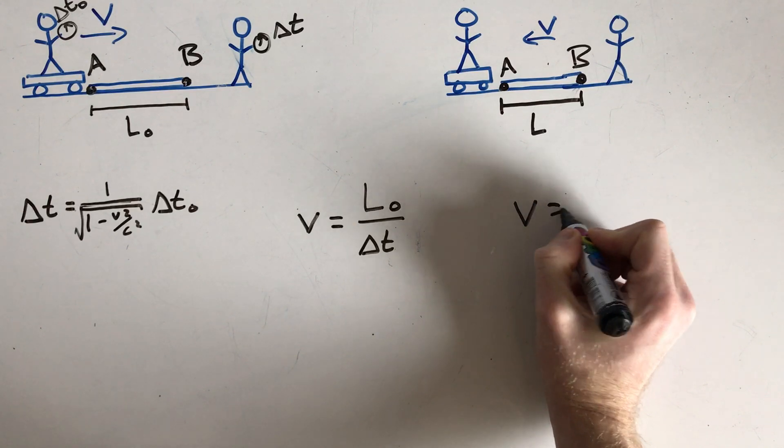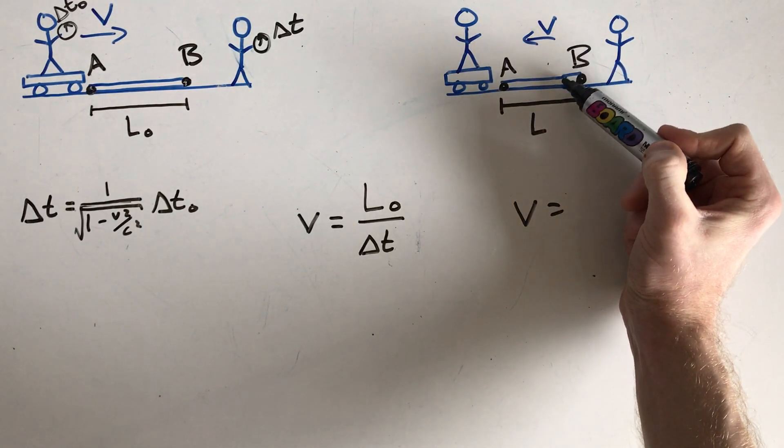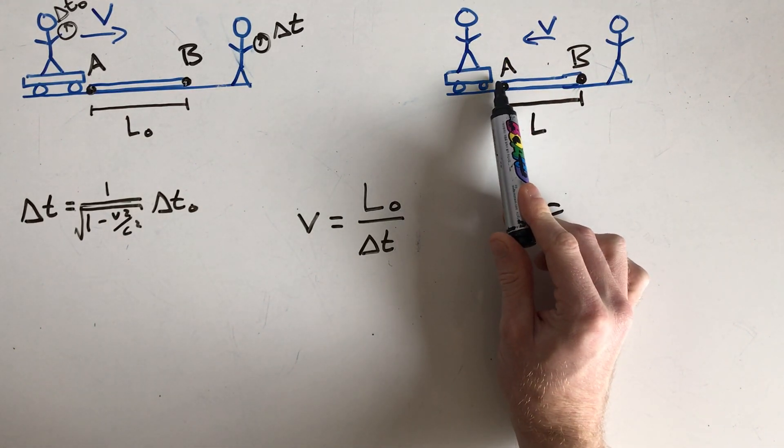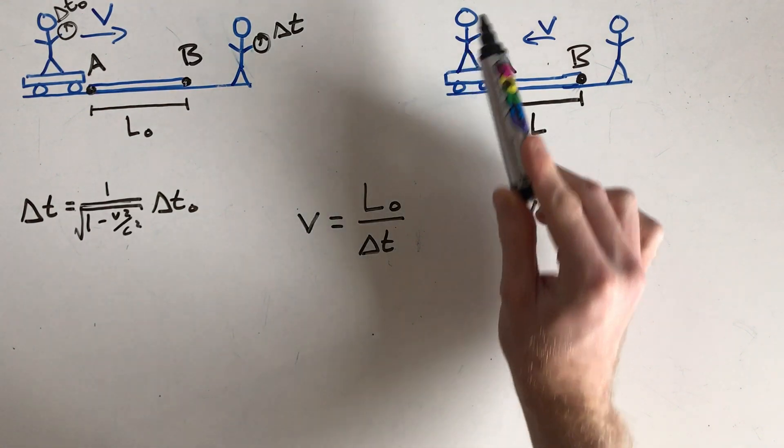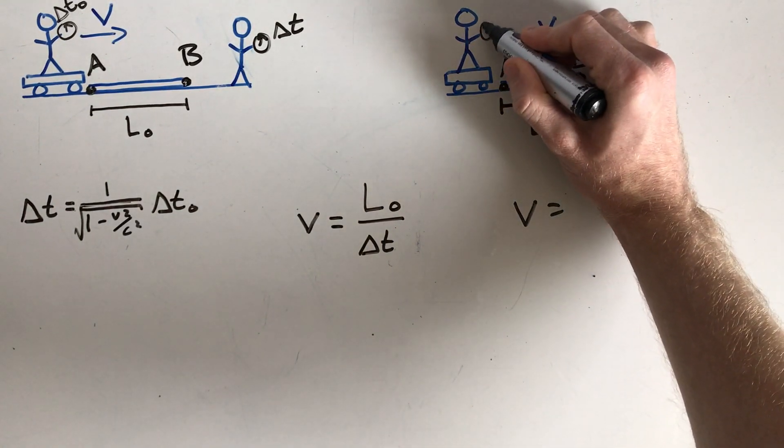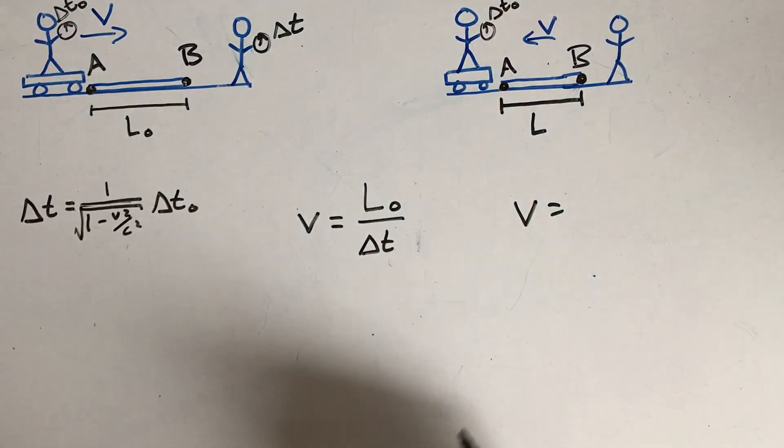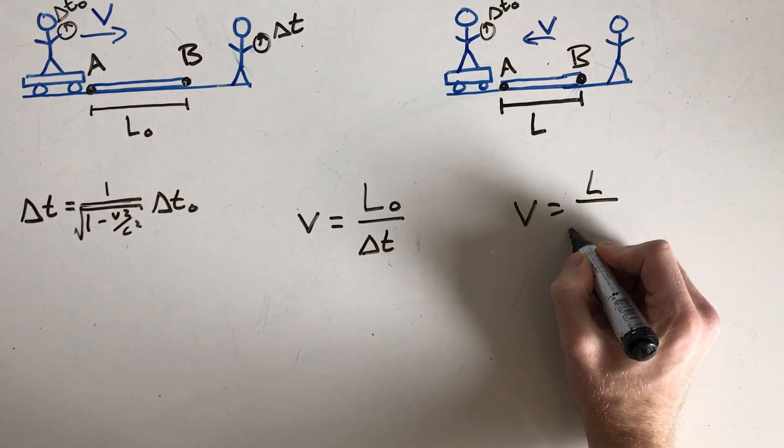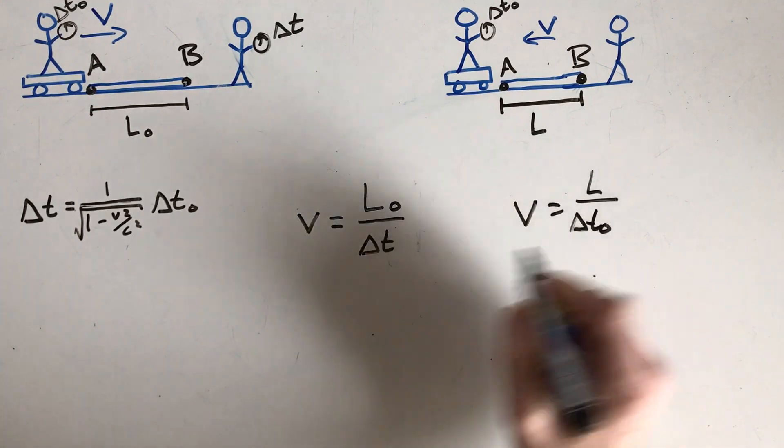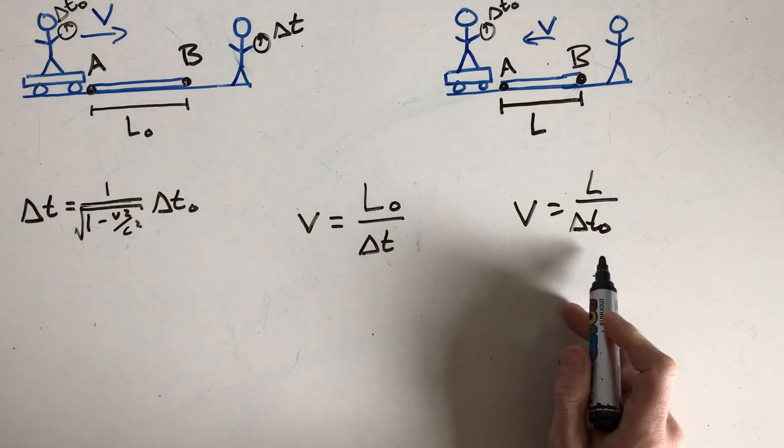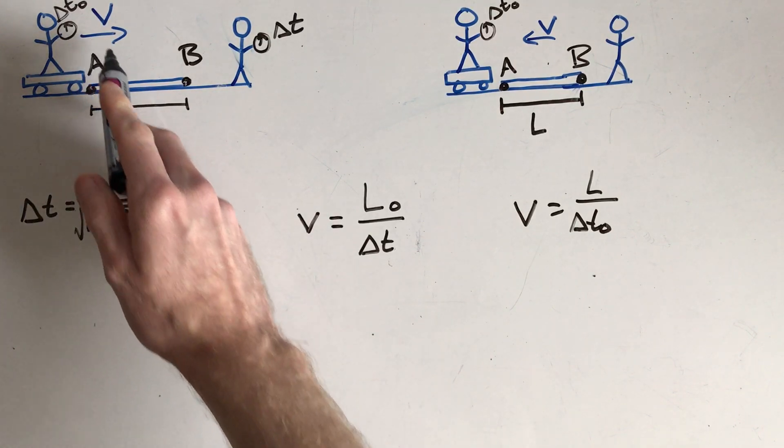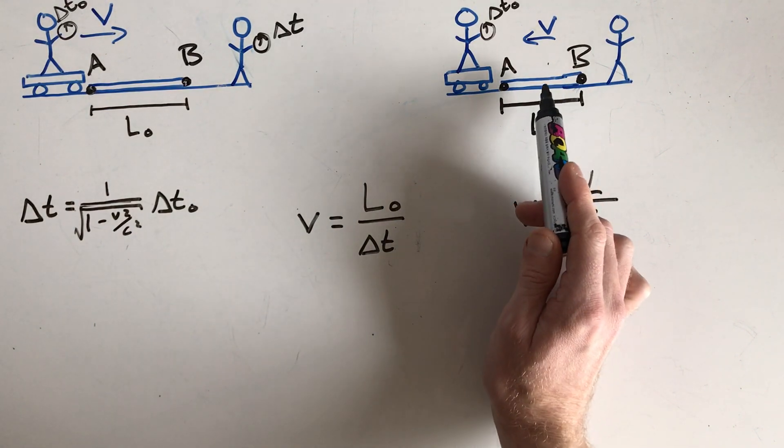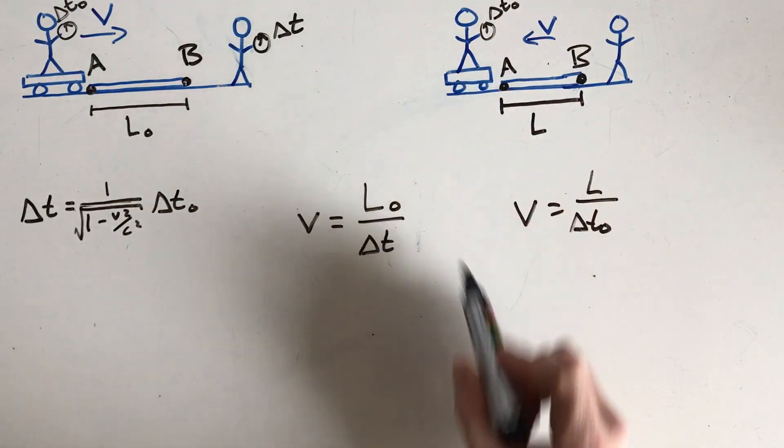This other person though, they're not moving in their own reference frame. They see the ruler as moving towards them. They will say, oh, the time that it takes for this ruler to pass me is the time that I measure, which is delta T naught. And the ruler will have some length L, which is different than L naught, because the times are different. But the speed that the skateboarder is moving according to this person should be the same that the speed the ruler is moving according to the skateboarder, or the rod, whatever we want to call it.